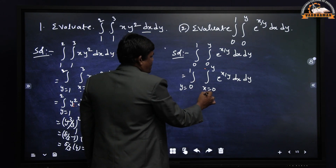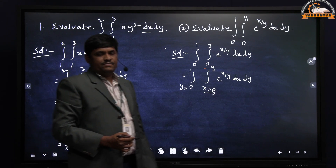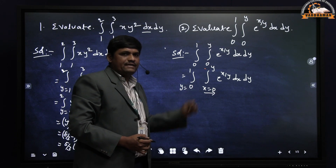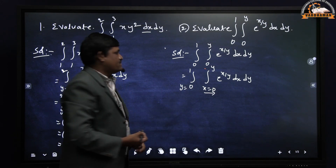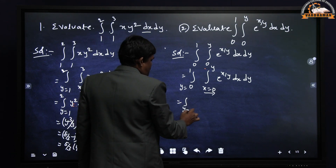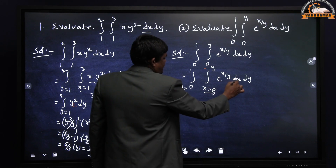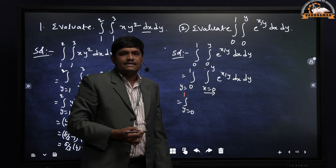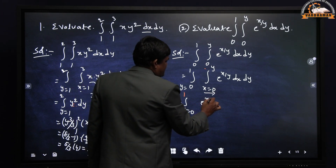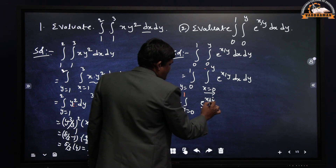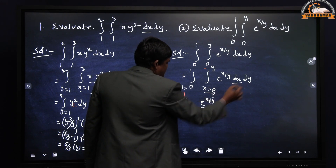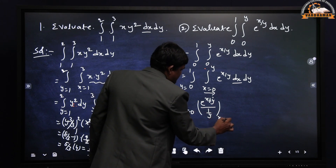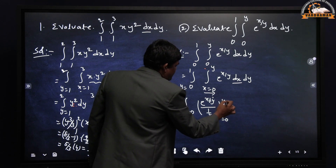The key point: I took this as the x limit because it contains y. If in future the limit contains x, you take that as the y limit. Now, integrating e^(x/y) with respect to x: using the formula ∫e^(x/a) dx = e^(x/a)·a, we get e^(x/y)·y with limits x from 0 to y, then multiply by dy.